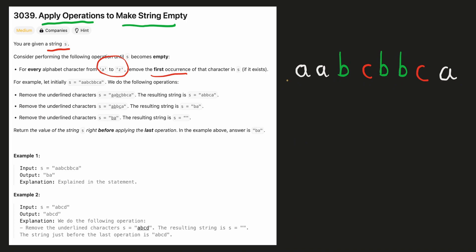For example, when we apply the operation the first time, this is the first occurrence of a so we delete it. This is the first occurrence of b so we delete it, and this is the first occurrence of c so we delete it. After the first operation this string remains. When we apply the operation again, the first occurrences of a, b, and c are deleted. On the third operation, there is only one occurrence of b and a remaining, so we delete both and have an empty string.